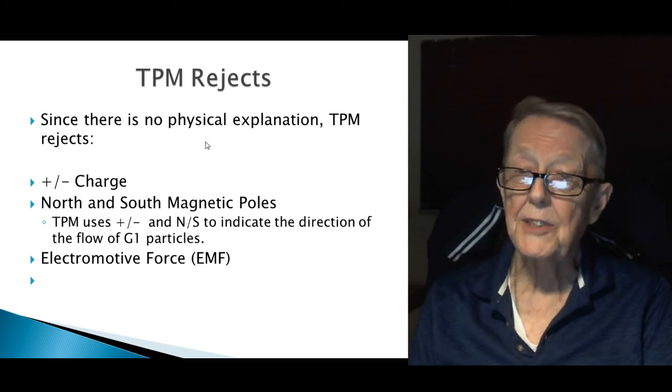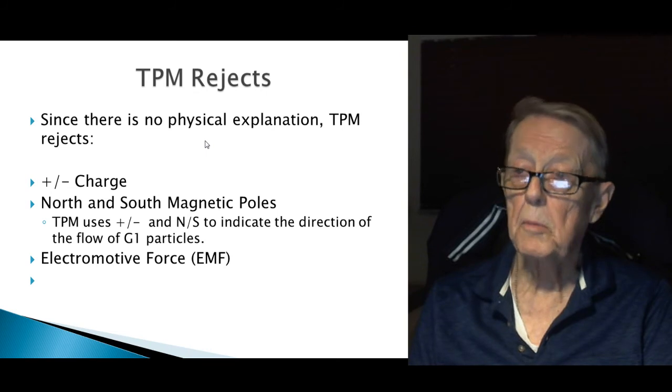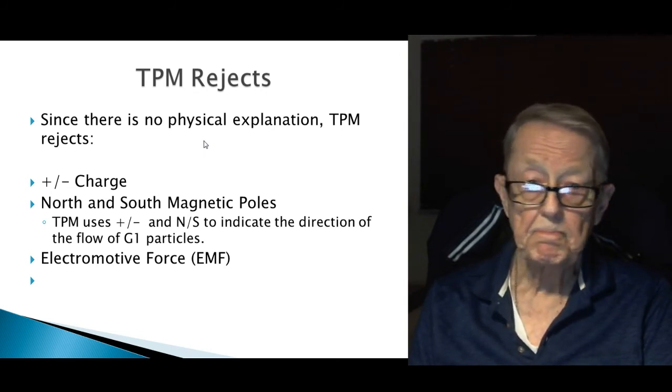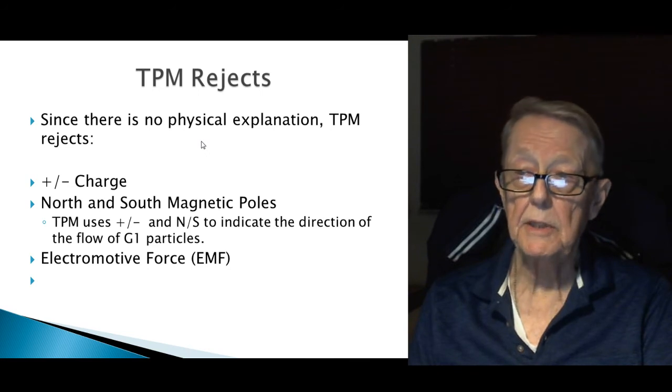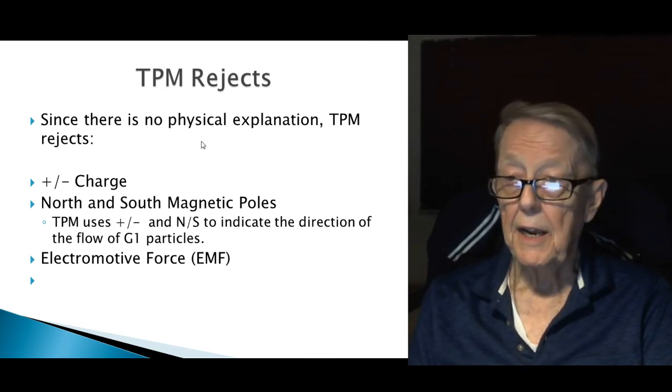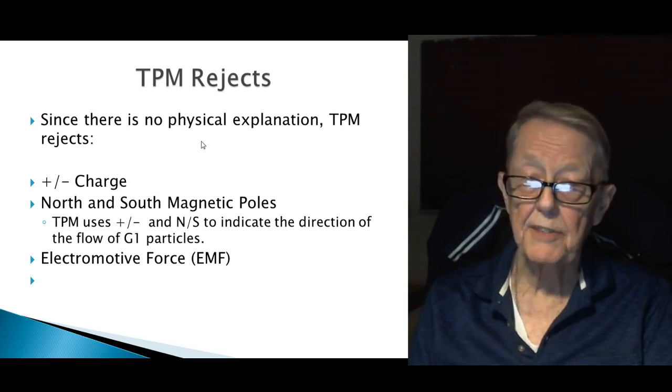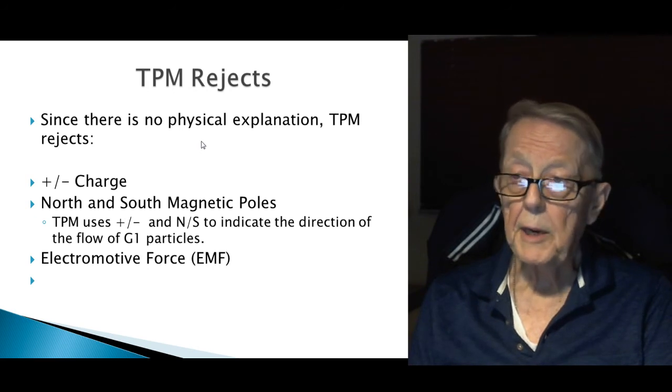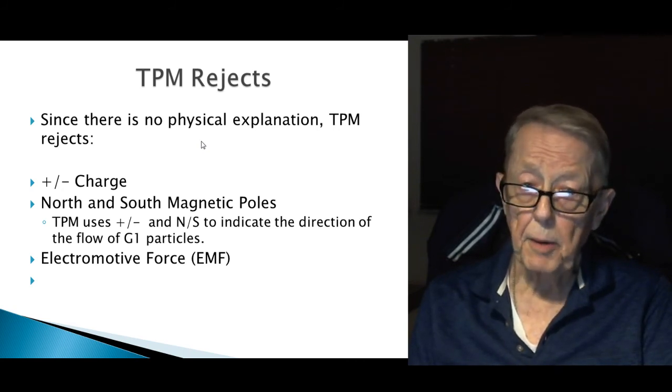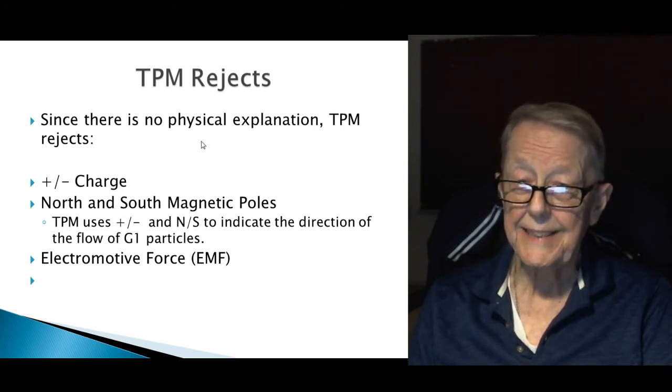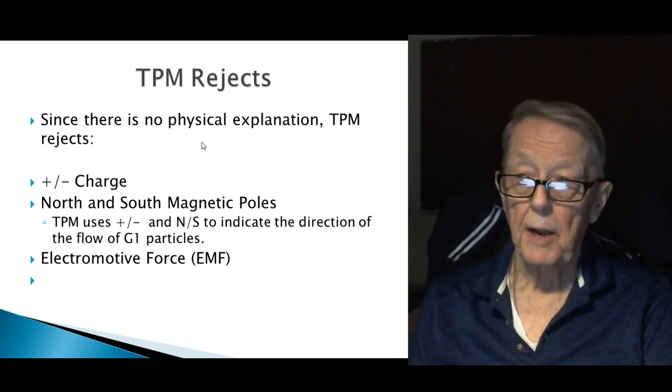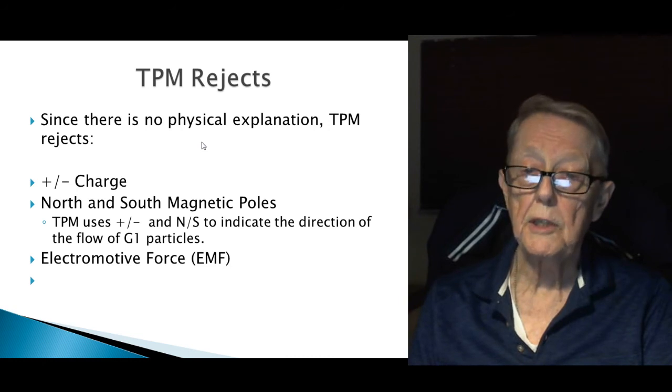Particle model rejects. Since there is no physical explanation for these ideas, particle model rejects plus or minus charge. There is not found in my mind an acceptable explanation of what causes an electron to be minus and a proton to be plus. What is the physical property? North and south magnetic poles. There's no explanation of that, it's just a label. But the particle model uses plus and minus and north and south, and what it does in the particle model is indicate the direction of the flow of the G1 particles. That's its purpose in life, not using it to describe some physical property, just the direction flow.